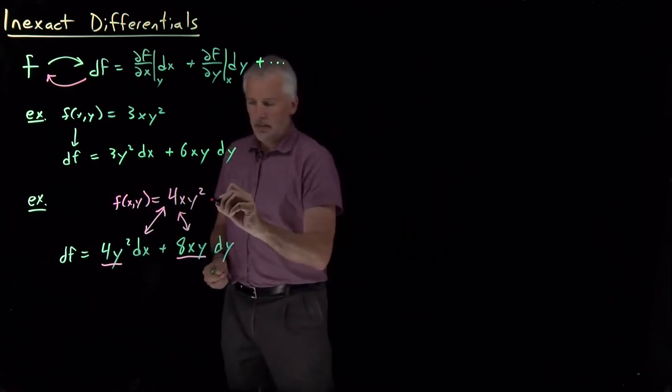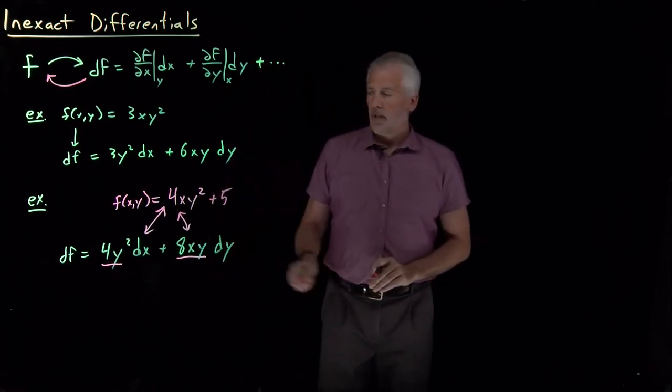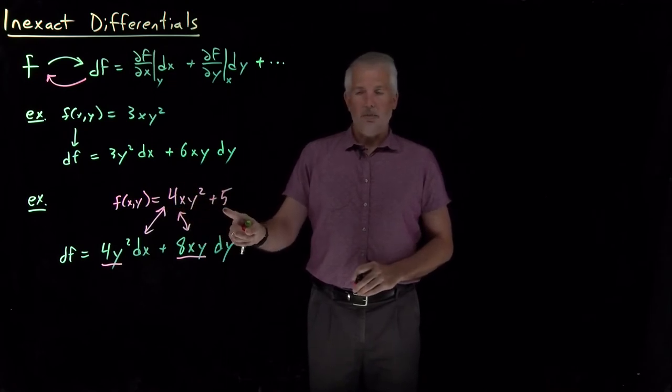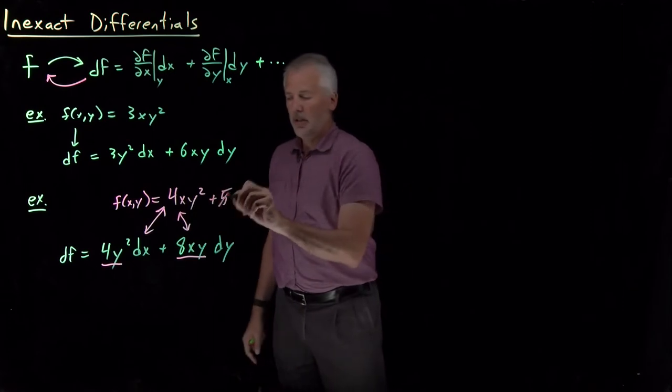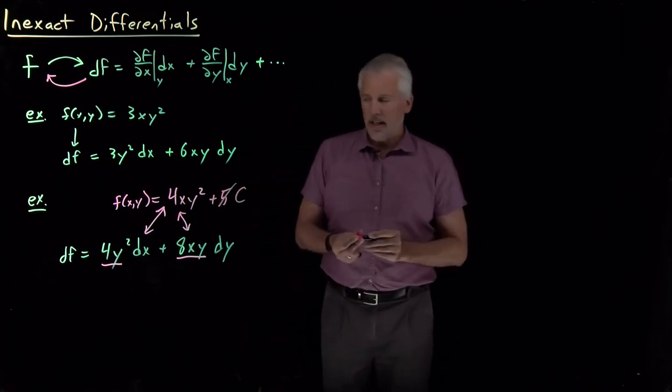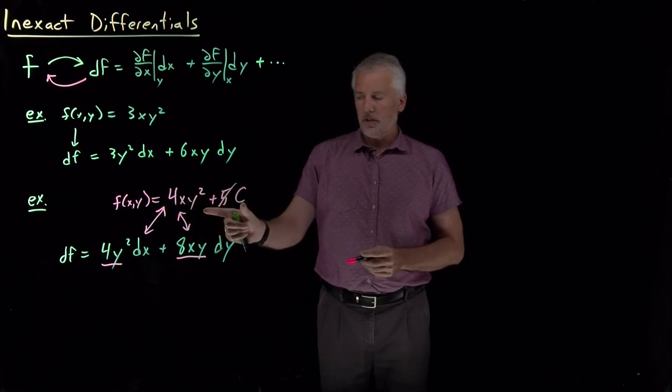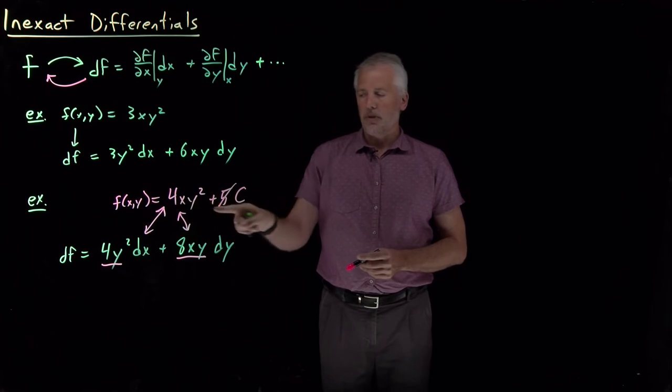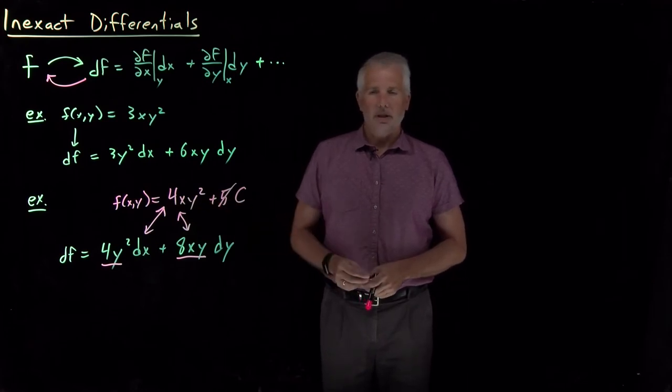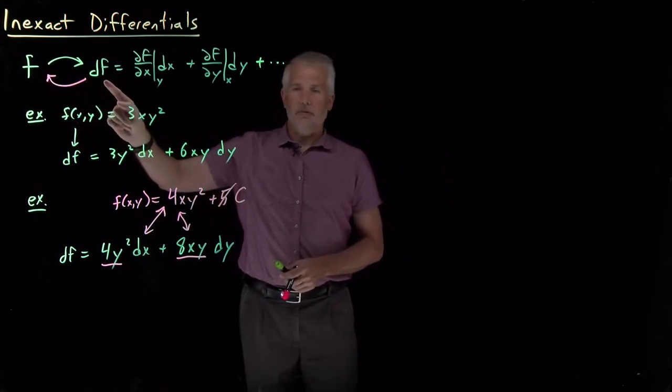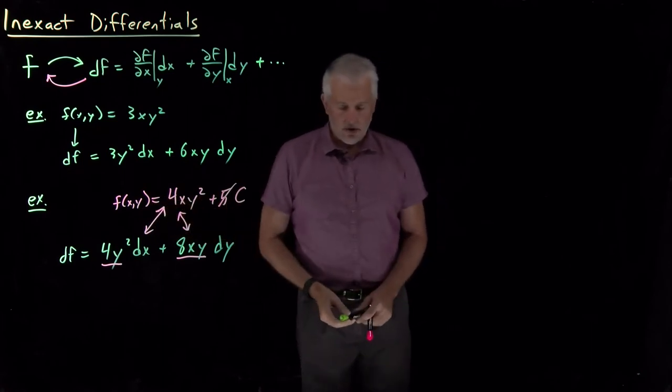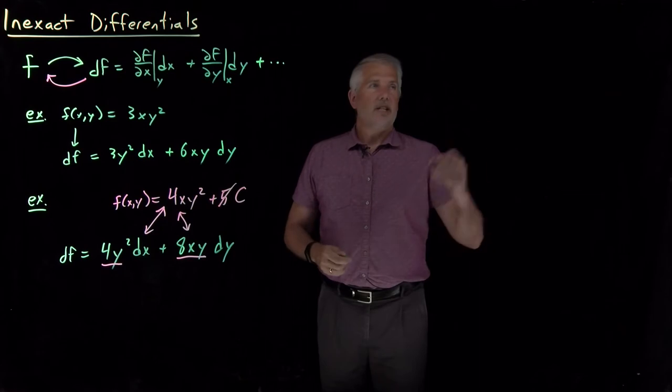And to be complete, I could have said my original function might be 4xy² plus a constant, plus 5 or plus 7 or plus any old integration constant here. Because when I take the partial derivatives of this function, the derivatives of the constant terms will disappear. So I can't tell from just the differential if the original function had an integration constant in it originally or not. So we can go both directions, from a function to its differential, or from a differential back to at least partially a description of the original function. But it doesn't always work that smoothly.